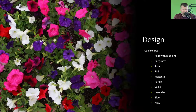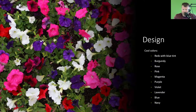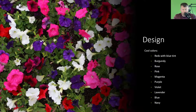The cool colors are reds with a blue tint — burgundy, rose, pink, magenta, purple, violet, lavender, blue, and navy. If you're designing a bed with cool colors in mind, stick to these colors. They go really well together. You wouldn't want to throw any warm colors in with your pinks and purples — it's just going to clash. Design school will teach you these color palettes. Keep your cool colors together and keep your warm colors together.